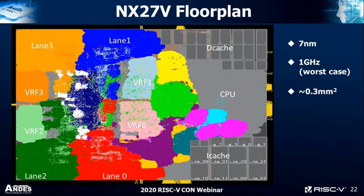Here's the floor plan of the NX27B processor. In 7-nanometer technology, it will achieve gigahertz speeds in worst case. We're expecting this entire macro, including cache RAMs, to be about 0.3 square millimeters. There may be slight variation depending on how you implement, but this implements a 16-kilobyte iCache and 32-kilobyte dCache.